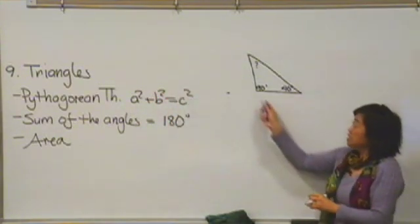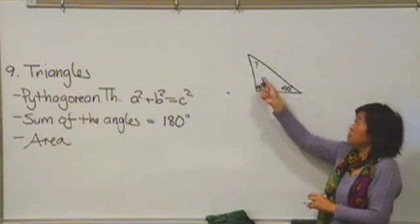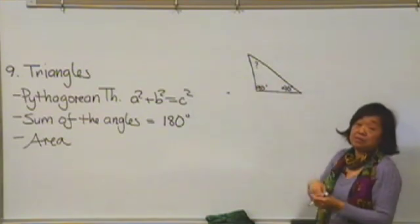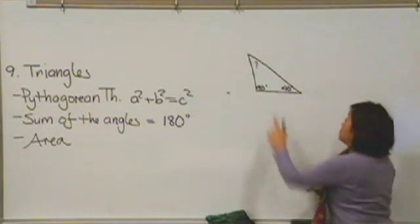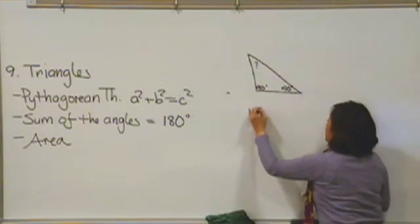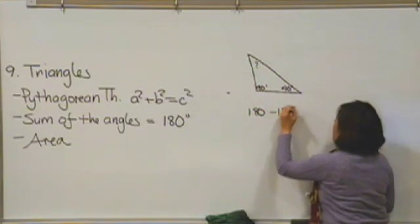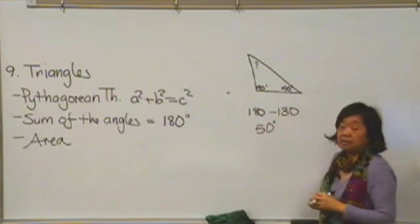So for example, if this is 90 and this is 40, and we were asked, hey, how big is that angle? 90 plus 40 is 130. So I know that this would be 180 minus 130. In other words, that would have to be a 50 degree angle.